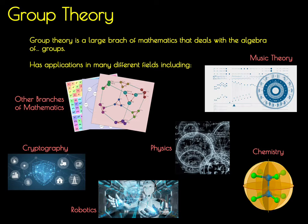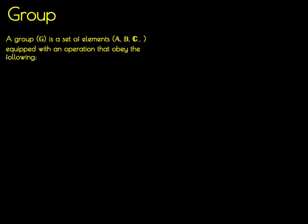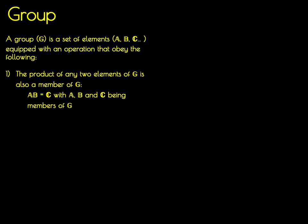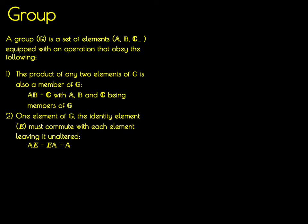Before we start to go into how we can apply group theory to chemical problems, we have to go through and discuss a little bit about the fundamentals of group theory, specifically, what is a group? A group is just defined as a set of elements that, when equipped with an operation, some mathematical transformation, obey the following set of rules. The first is that the product, so if you do an operation on any two elements of a group G, it'll return another element that's also a member of that group G. The second rule is that one of the elements of group G has to be an identity element, and it must commute with every element in that group, leaving it unchanged. So if you have some element A, and you perform the operation with the identity element, that's the same as taking the identity element and performing that operation with A, and returning member of the group A.